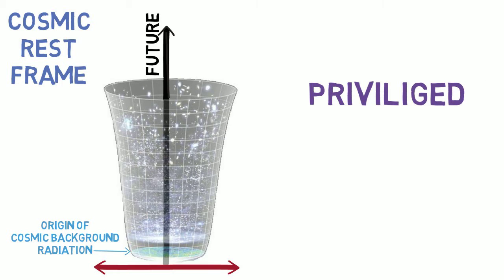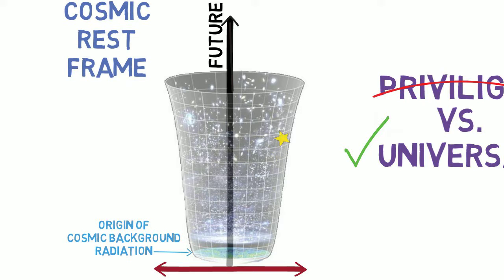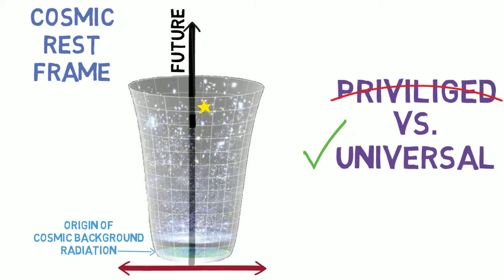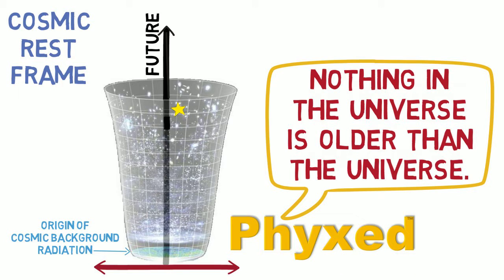The rest frame of the universe is that which sees background radiation equally redshifted in all directions. This cosmic frame is not privileged in terms of physical laws. So motion relative to the universe still results in each frame seeing the other's clocks run slow. However, the universe's frame readily serves as a universal reference. It makes little sense to say the universe moves relative to objects contained within it. It's also reasonable to postulate that nothing in the universe is older than the universe.